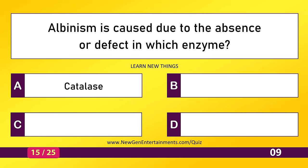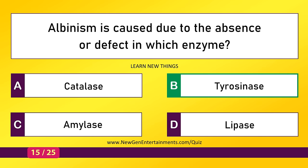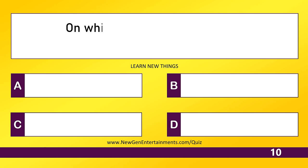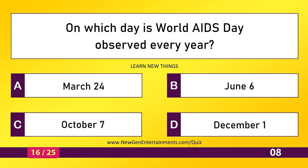Albinism is caused due to the absence or defect in which enzyme? Tyrosinase. On which day is World AIDS Day observed every year? December 1.